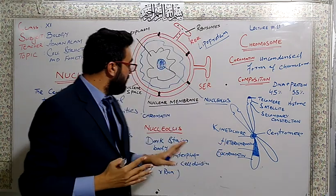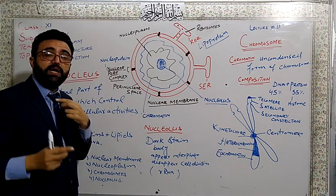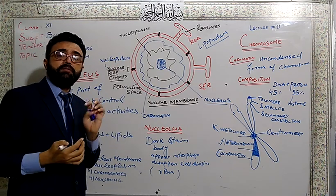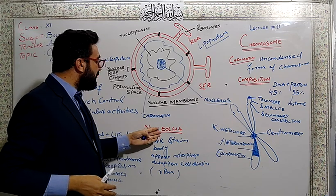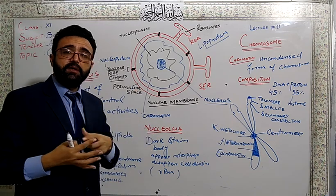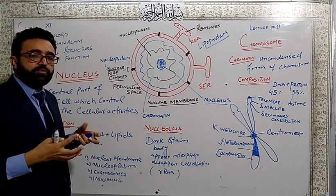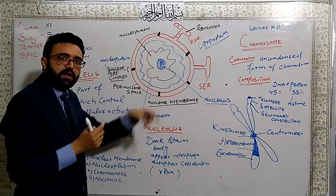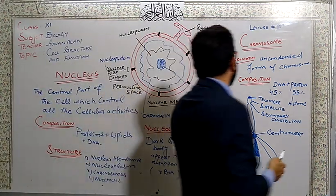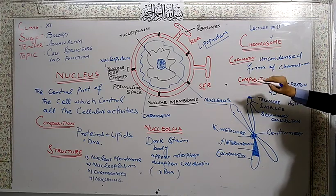Usually when the chromatin material condenses and accumulates in an area, that makes a dark stain. Now let's discuss chromosomes. First, what is chromatin? Chromatin is uncondensed form - long fibers. When they condense, they convert into chromosomes.